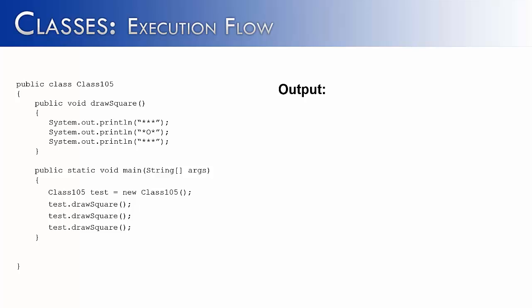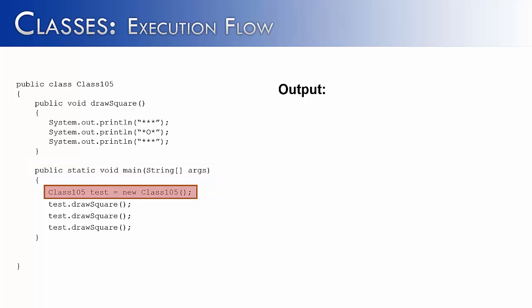Whenever a program starts in Java, it's going to look for the main method, and once the main method is called, it's going to do the programming statements there within. The first thing that we do is construct an object of the class 105 class. We have to do this because we want to use the methods inside of there — the drawSquare method is in the class 105 class. It's an important point to note that we cannot use the methods of the class unless an object is created.